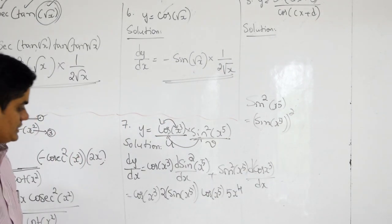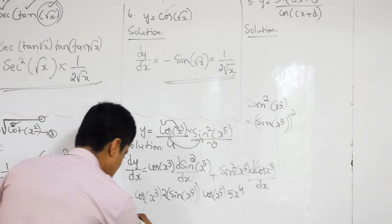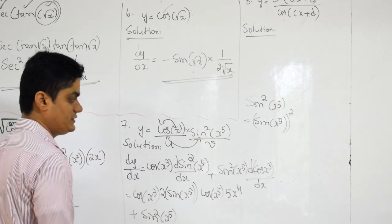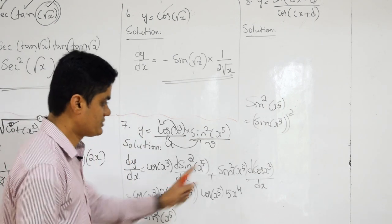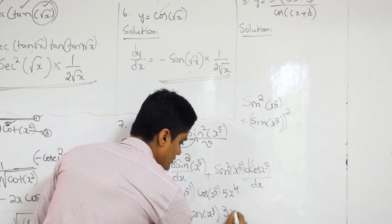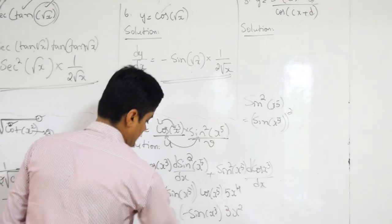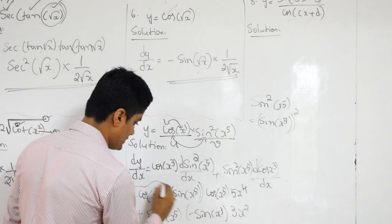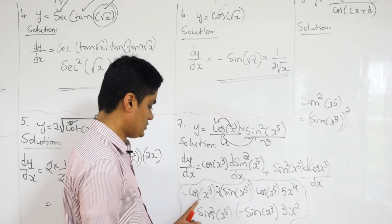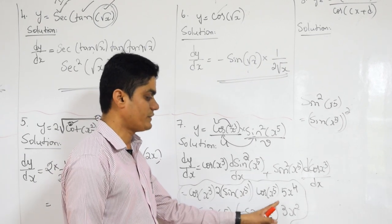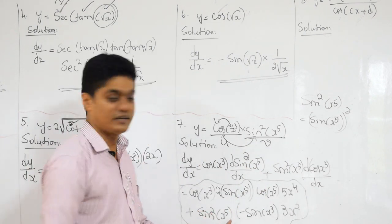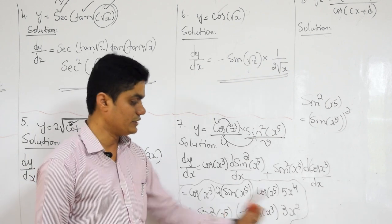So this is the differentiation of the first term. Plus, sin squared of X to the power 5 as it is. Cos of X cubed is simple — outside cos, inside X cubed — that is minus sin of X cubed into 3X squared. That's it. No need to simplify. The final answer is: cos of X cubed times 2 sin of X to the power 5 into cos of X to the power 5 into 5X to the power 4, plus sin squared of X to the power 5 into minus sin of X cubed into 3X squared.